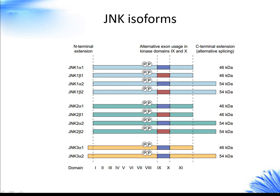Alternative splicing at the C-terminus generates isoforms of 46 kDa and 54 kDa. Unlike JNK1 and JNK2 isoforms, the gene that encodes JNK3 is expressed only as the 54 kDa isoform and contains an extended N-terminal region.